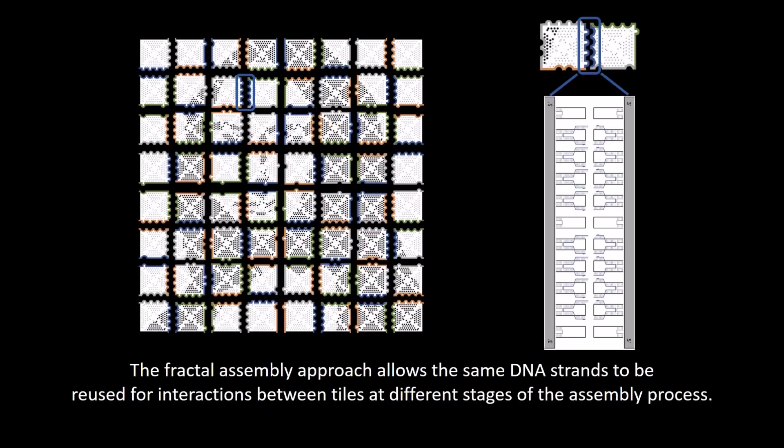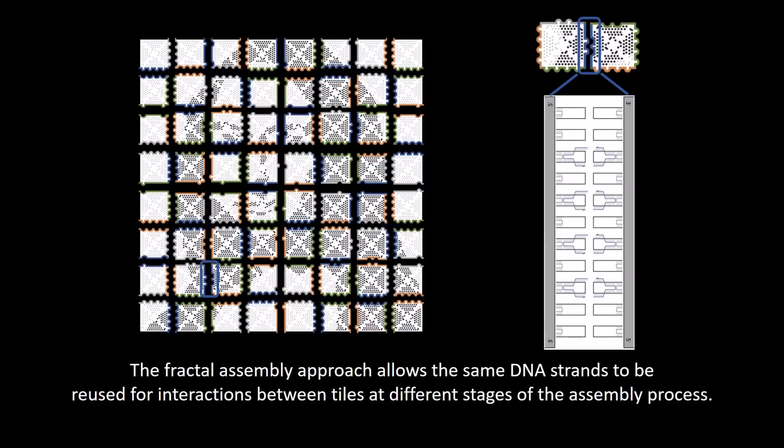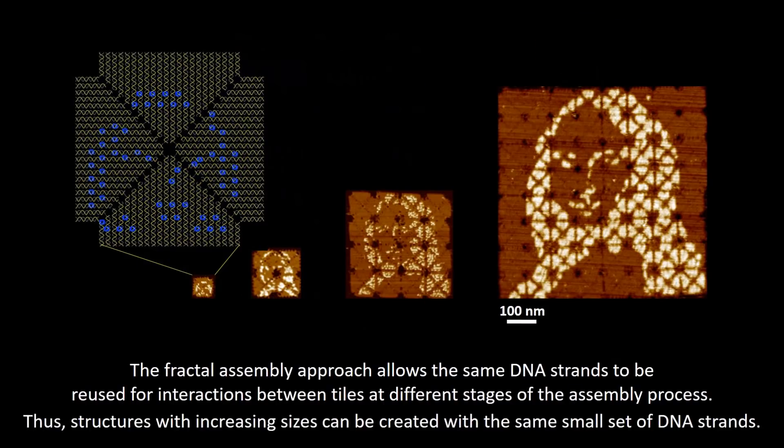The fractal assembly approach allows the same DNA strands to be reused for interactions between tiles at different stages of the assembly process. Thus, structures with increasing sizes can be created with the same small set of DNA strands.